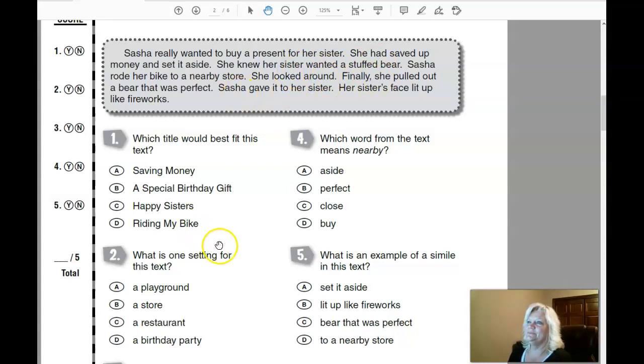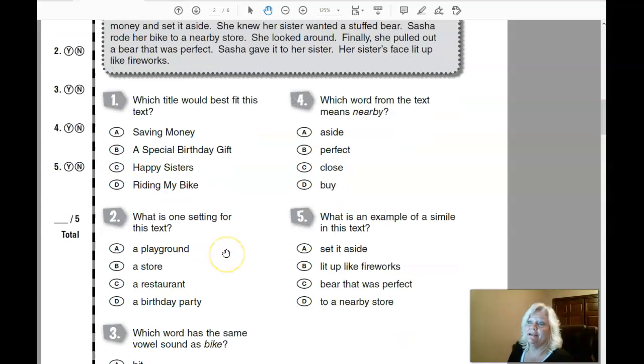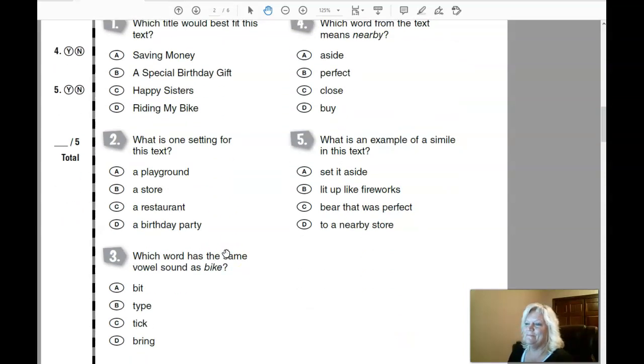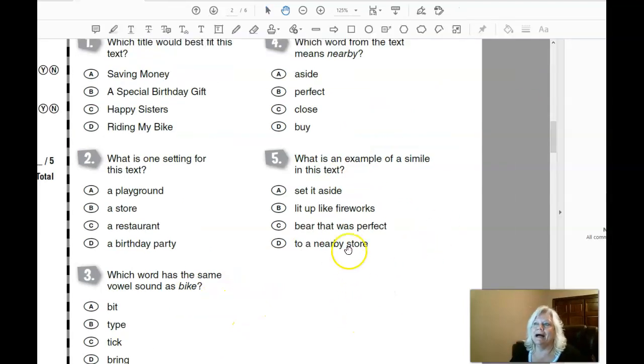Number three: Which word has the same vowel as in bike? And in this one, bike has a long I sound.